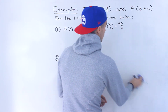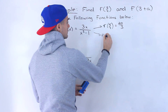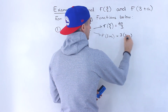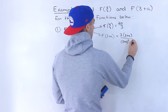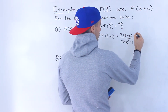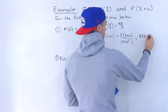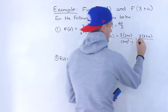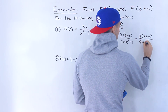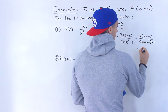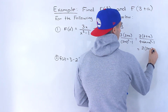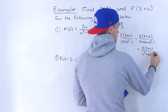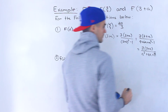For f of 3 plus a, we plug in 3 plus a for the x value. So we'd have 3 times (3 plus a) all over (3 plus a) squared minus 1. We keep the numerator factored and foil out the denominator: 3 plus a times 3 plus a gives us 9 plus 6a plus a squared minus 1.